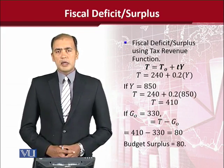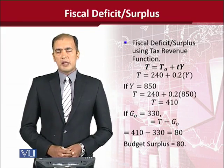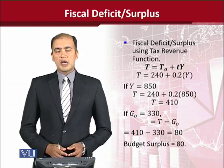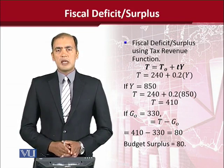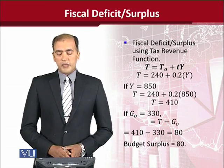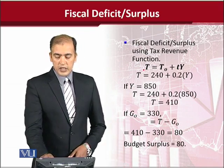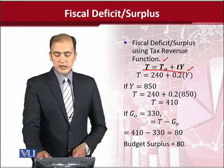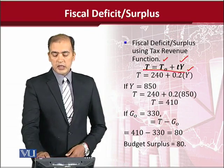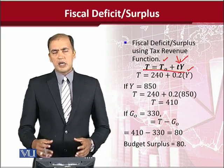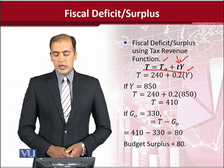Now we shall come to a more in-depth calculation using a tax function. The tax function is going to allow us to accumulate tax revenue, calculate its value, and then compare it with government spendings. We have a tax function shown here in its standard form. This is the autonomous part of the tax and this is the induced part. The small t represents the tax rate, which when multiplied with income gives rise to the induced part of the tax.